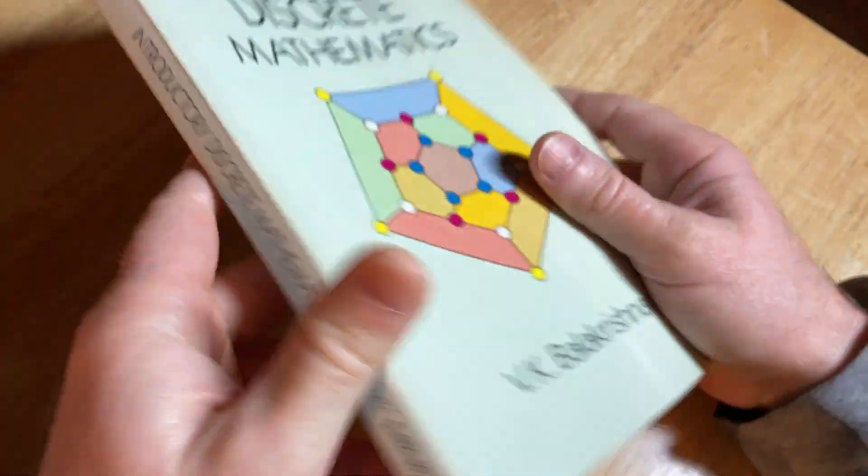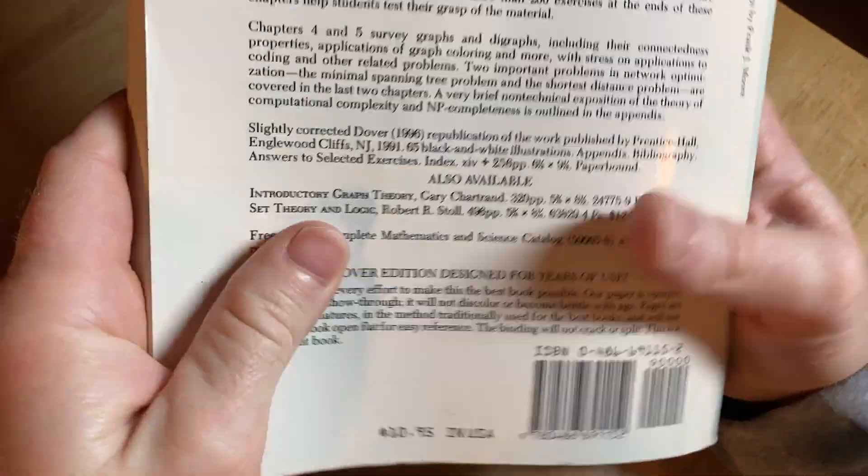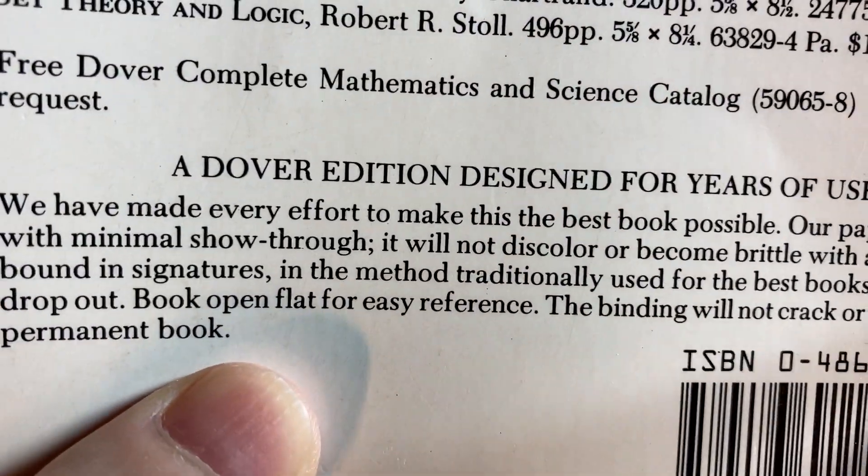This is a Dover book, meaning that it is a reprint of an older book and it's good quality. Here it talks about the actual book.